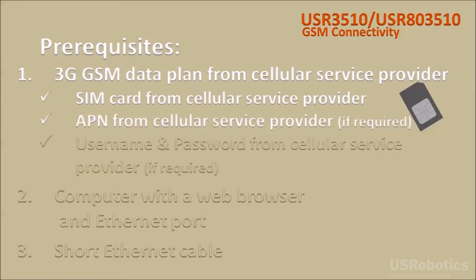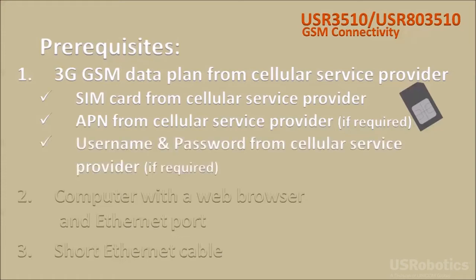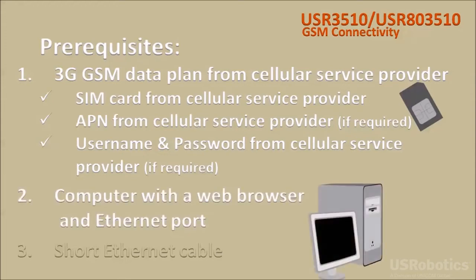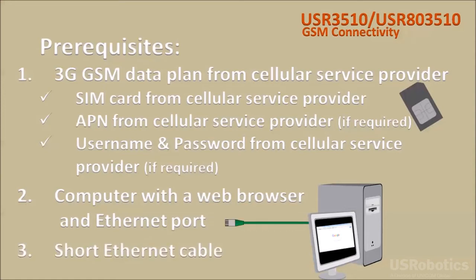If the cellular network you're using requires an access point name, you'll need that from your cellular service provider. If the cellular network requires an assigned username and password, you'll need those from your cellular service provider as well. You'll also need a computer with a web browser and an ethernet port, and a short ethernet cable to connect your computer to the gateway.